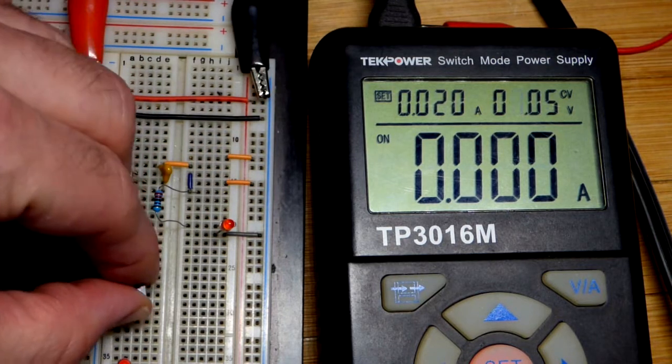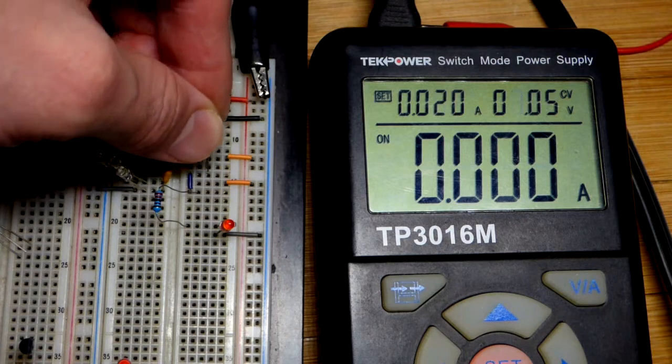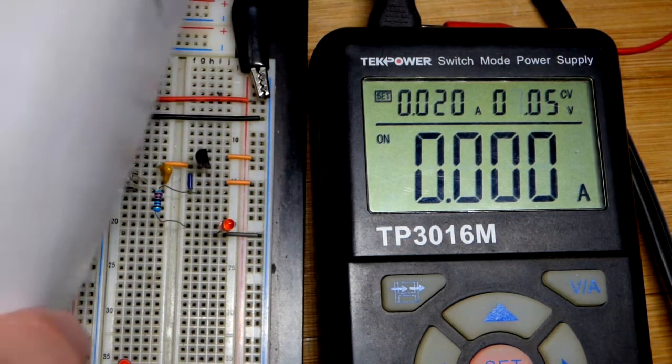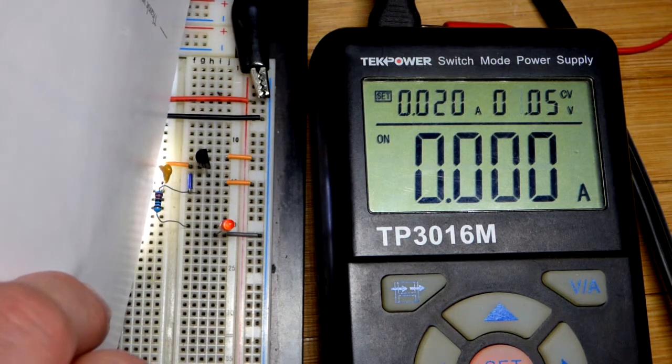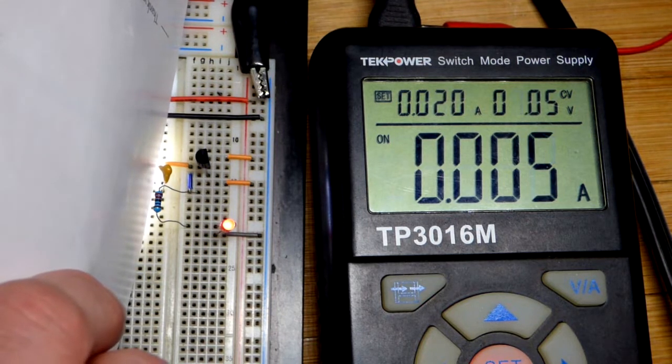So we're going to compare that now to the KSP13 which is a Darlington pair of transistors in one package right there. We will put it back and so I'm using 7 volts on the power supply and now you can see current flowing.